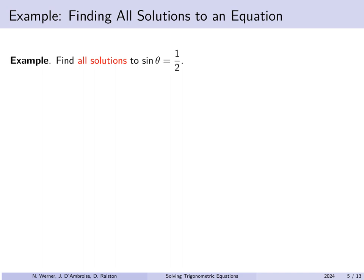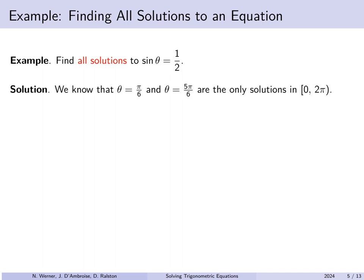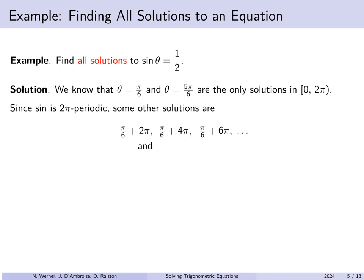Now let's find all solutions to sin θ = 1/2. Earlier we found the only solutions from 0 to 2π were π/6 and 5π/6, but now we're asked to find all solutions. We'll rely on the periodicity of the sine function — its period is 2π. So from the solutions π/6 and 5π/6, we can get others like π/6 + 2π, π/6 + 4π, π/6 + 6π, and also 5π/6 + 2π, 4π, 6π, and so on. We can also subtract 2π or 4π.